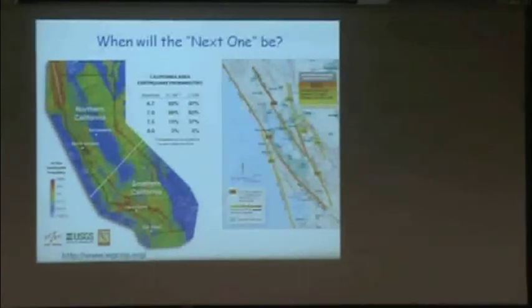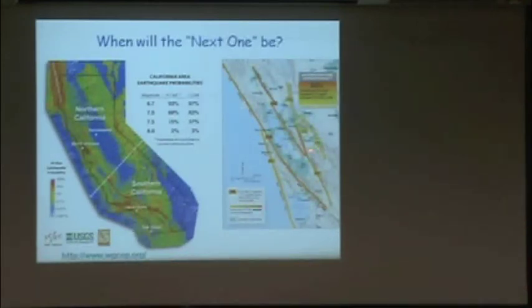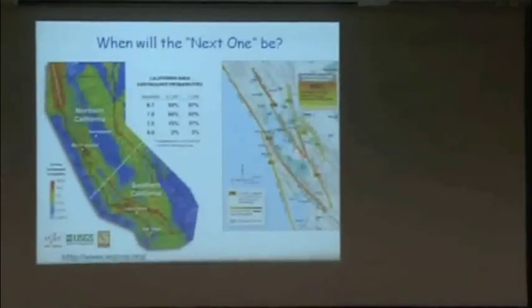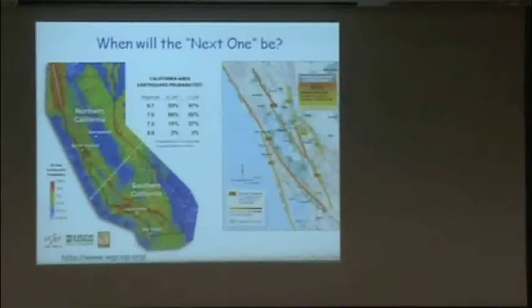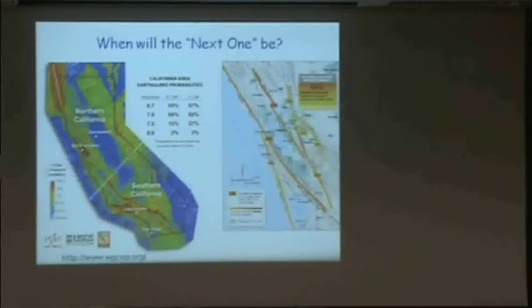The reason they use 30 years is because that's something insurance and mortgage companies understand — is it going to happen before you pay off your mortgage? Probably. The Hayward Fault is most likely to go next. The Hayward-Rogers Creek Fault system: if it's only the southern Hayward Fault like 1868, it would be about a 6.8. If the whole thing goes at once, it's going to be around a 7.2.